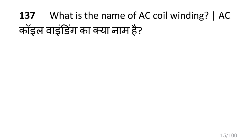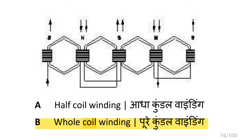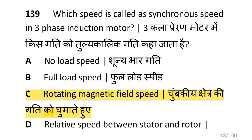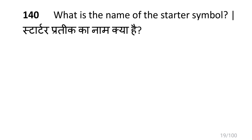The name of the AC coil winding shown is whole coil winding. The coil winding that is diamond-shaped or mesh-shaped is diamond shaped mesh shaped coil winding. The speed called synchronous speed in a three phase induction motor is the rotating magnetic field speed.